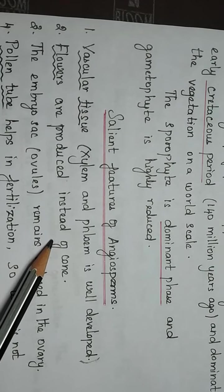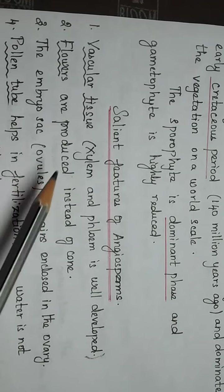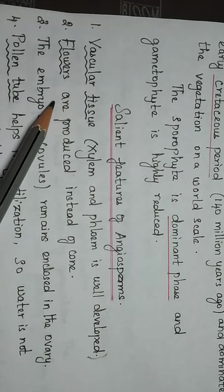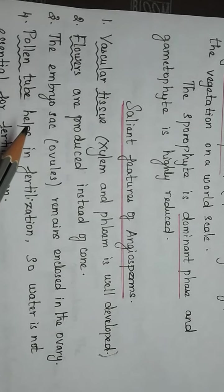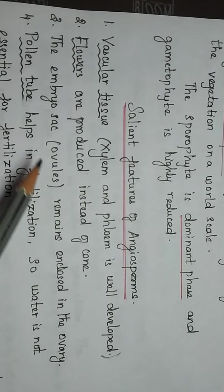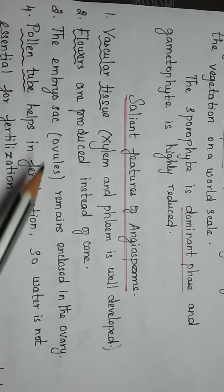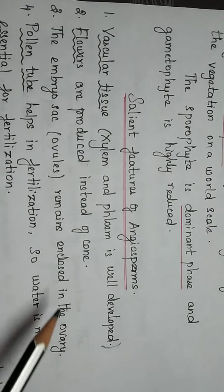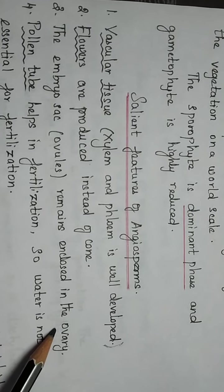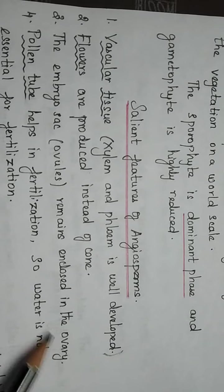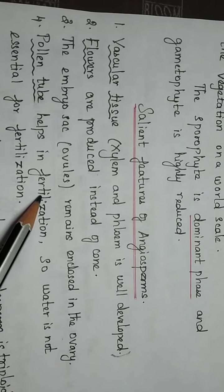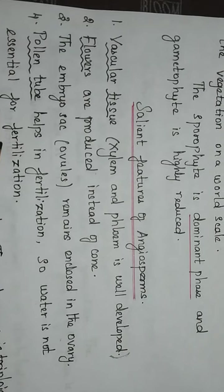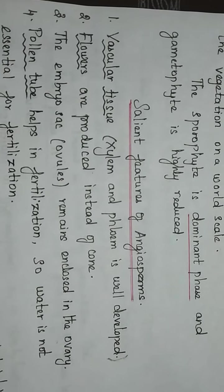In gymnosperm plants, male and female cones are present. In angiosperm plants, the ovules remain enclosed in the ovary. The ovules, that is the seeds, remain enclosed in the ovary in angiospermic plants. Pollen tubes help in fertilization, and water is not essential for fertilization.